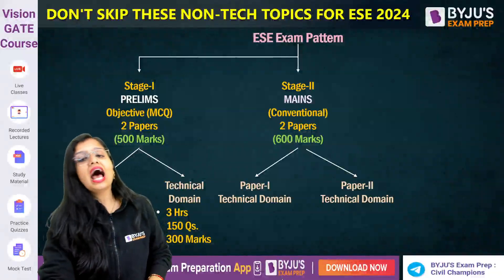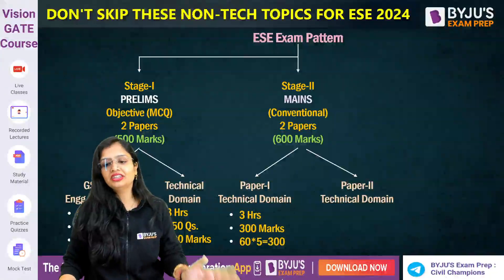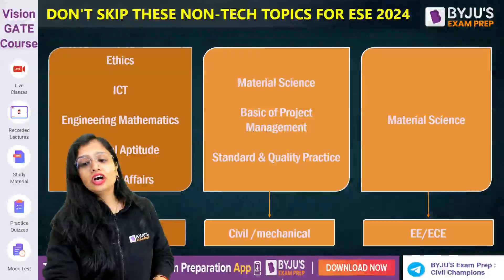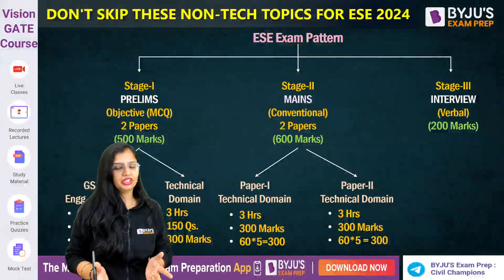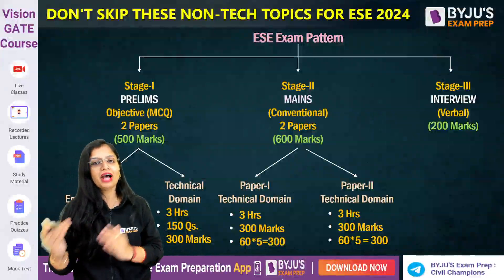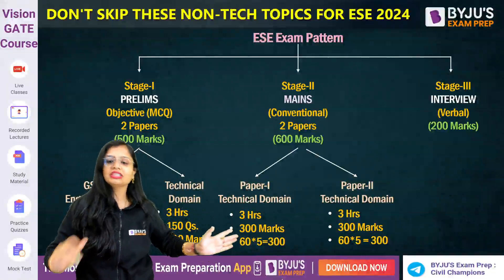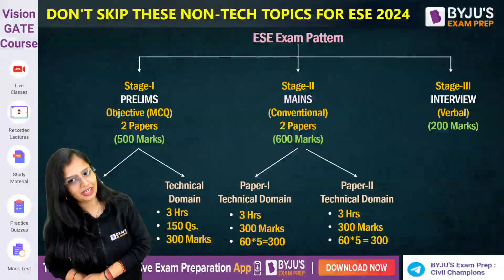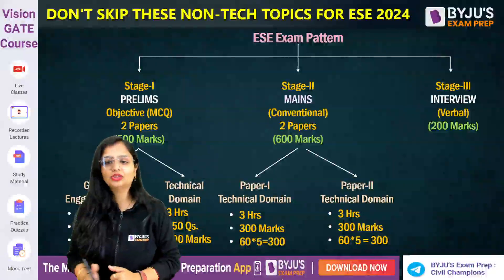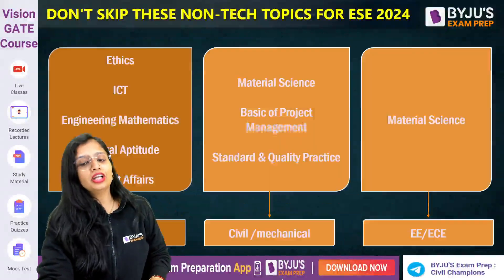Those who clear Prelims move to Mains. The Mains conventional paper is 600 marks — two Technical Domain papers of 300 marks each, three hours each. So in total: Prelims is 500 marks, Mains is 600 marks, and the Interview carries 200 marks. Candidates who clear Mains then move to the interview round.